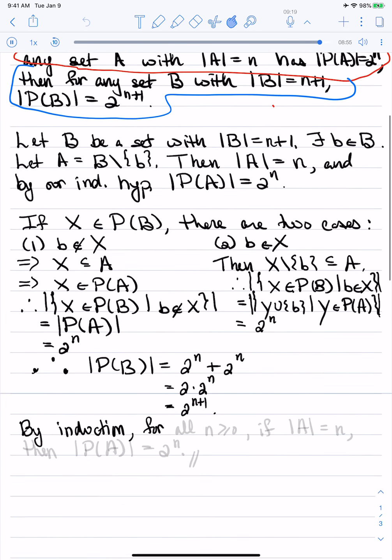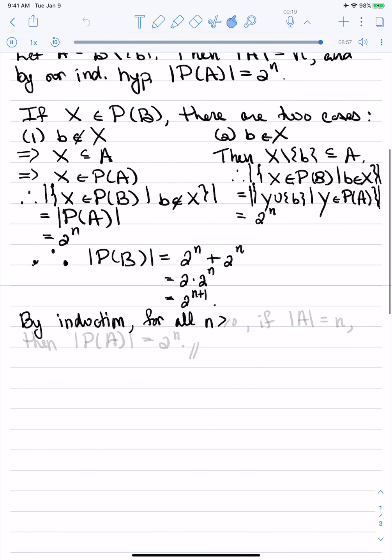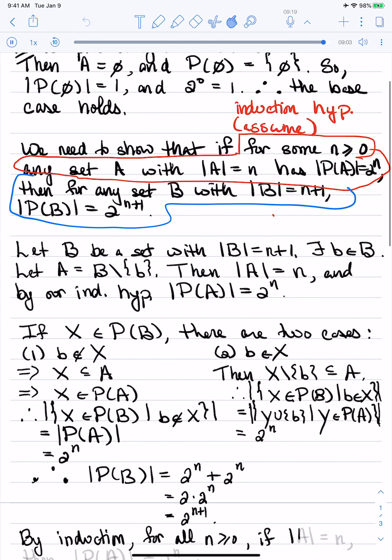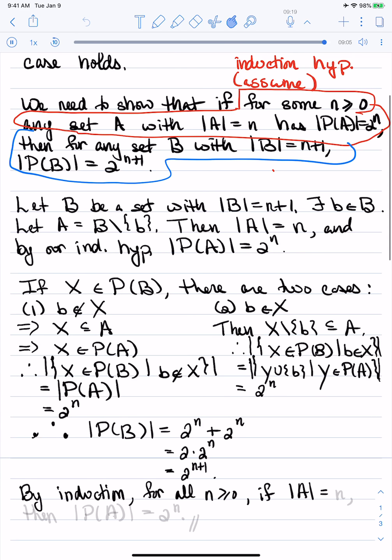And then we can say, by induction, now for all n greater than or equal to 0, if A has size n, then its power set has cardinality 2 to the n.